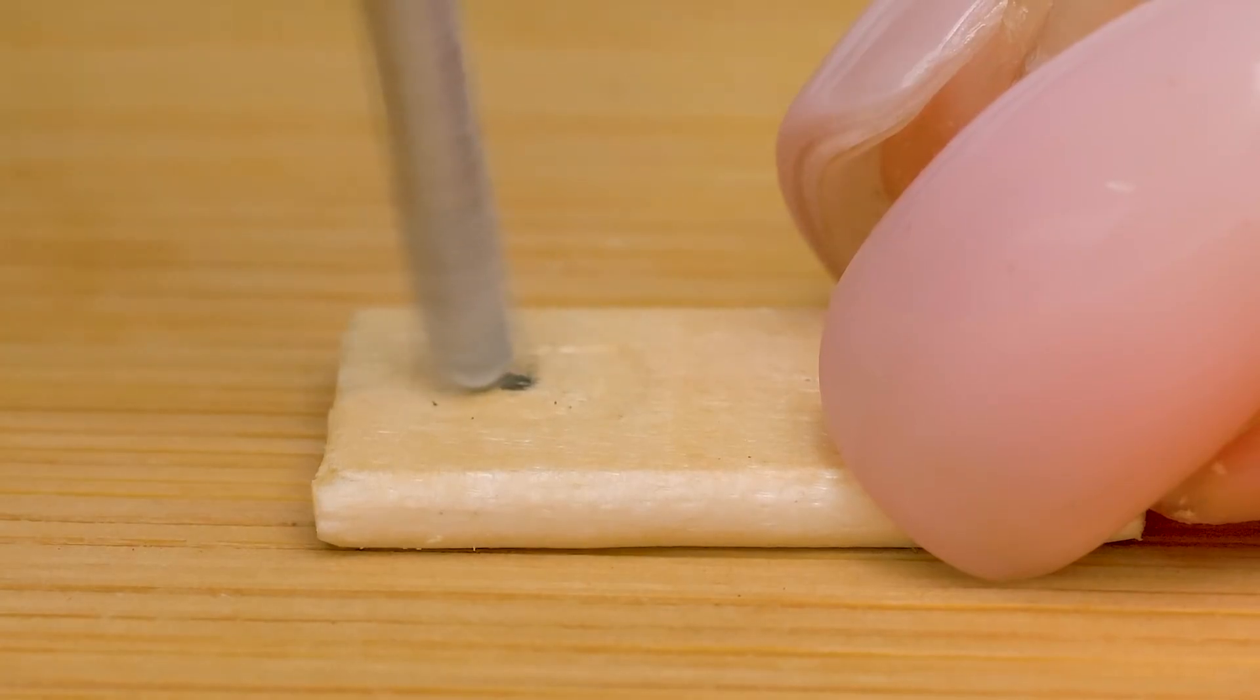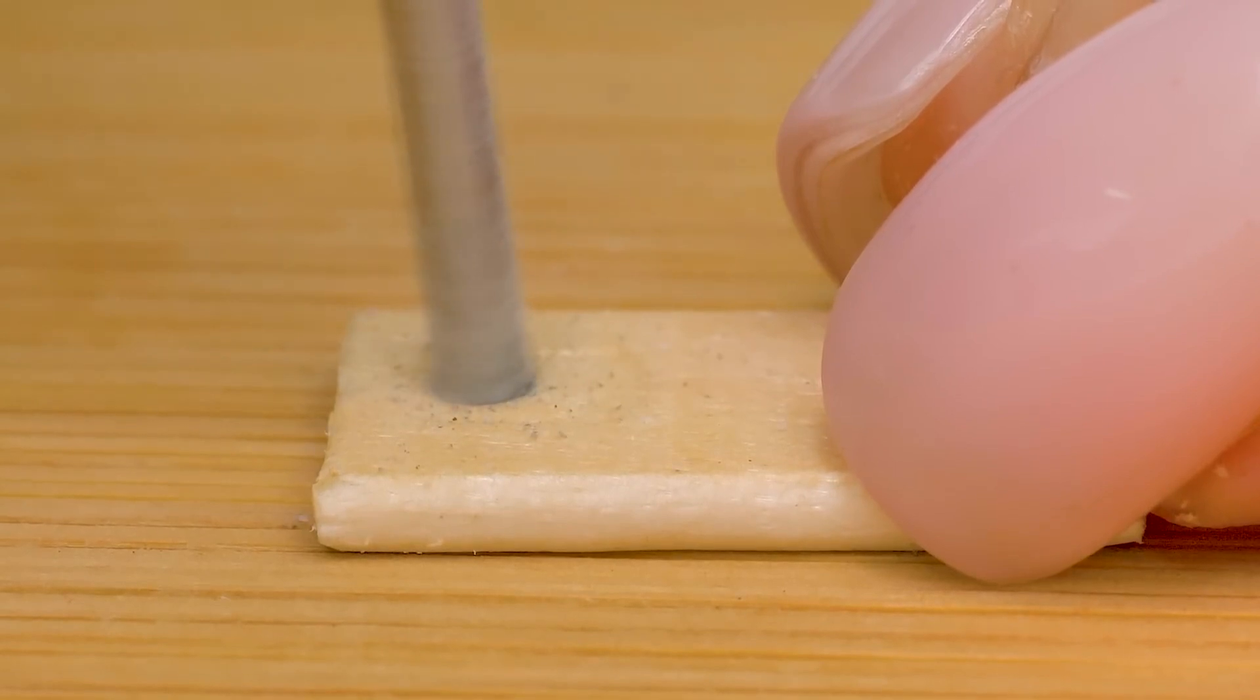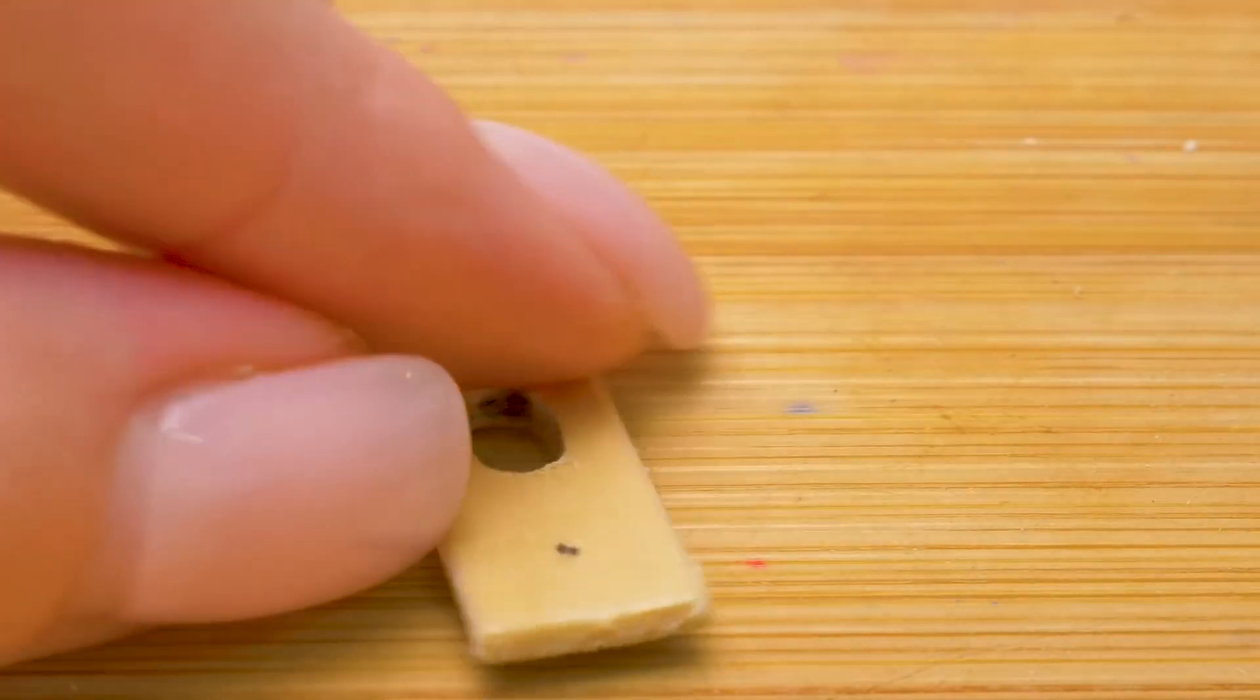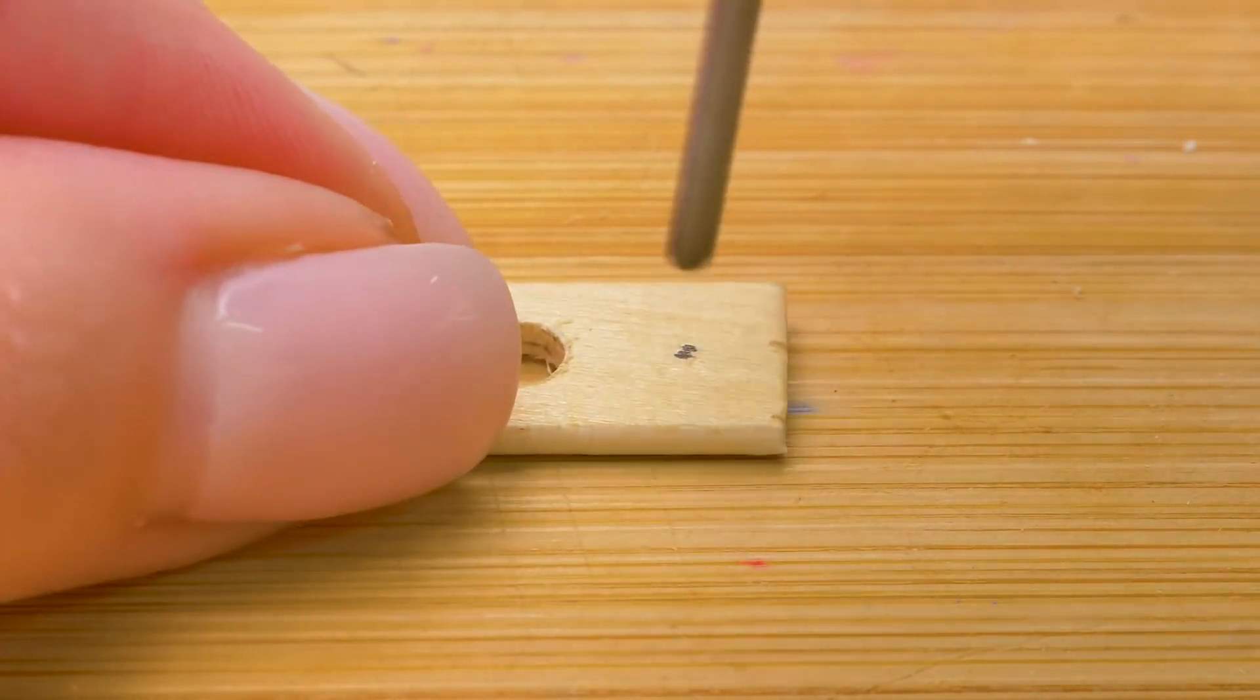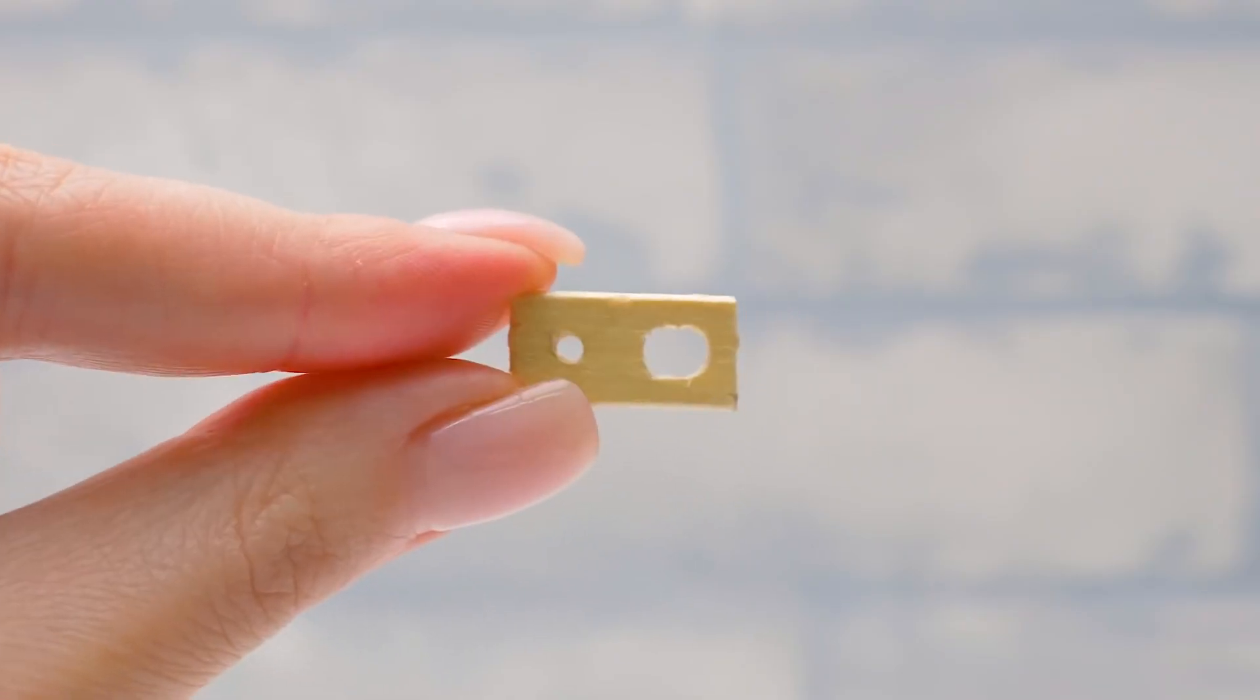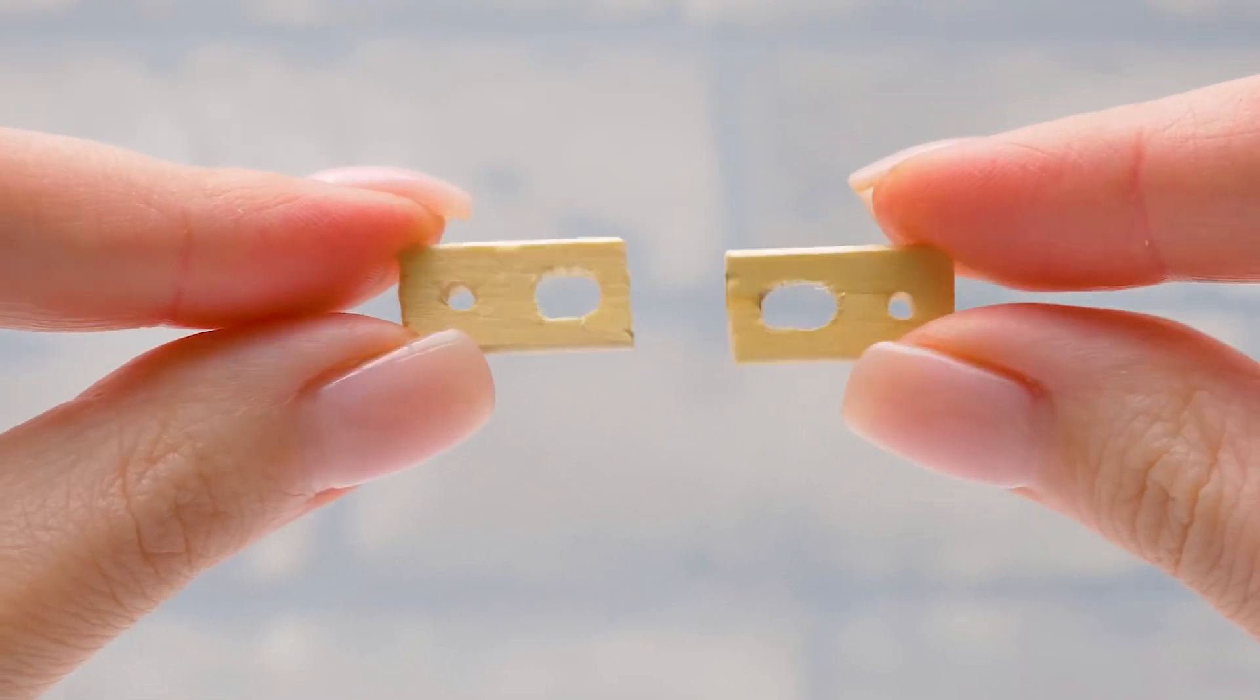Now we need to drill a hole here. Guys, this stage is quite dangerous. Ask an adult to help you. You must be very careful. While here, we'll make a simple round hole. Watch your fingers! Ta-da! Not bad. Sammy did a great job with the second part.